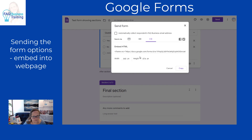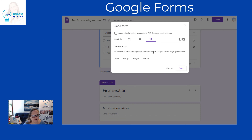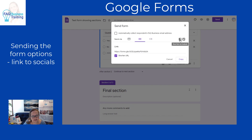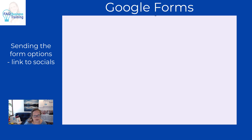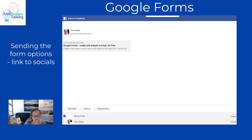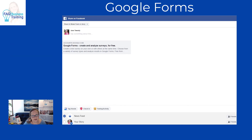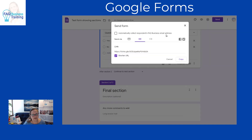The embed option is for when you want to embed the form into your website — you grab the embed HTML and use it in an embed section on your site. For instance, on Teachable, which is a course platform, you can embed these forms. If you want to send a link via Facebook, you just click Facebook and it opens up to send a link straight to that form, allowing you to send surveys via Facebook.